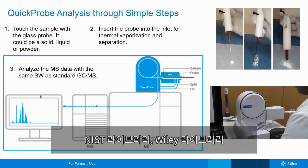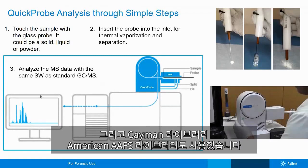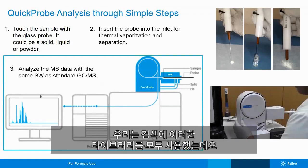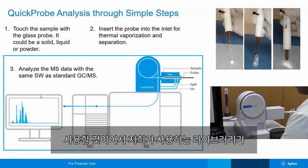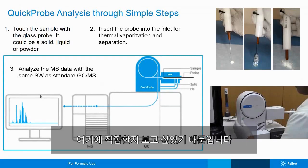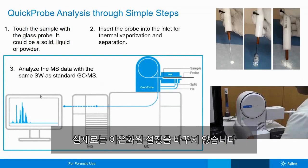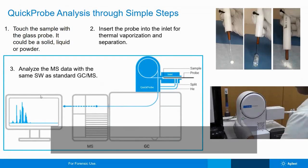We used our traditional libraries: the NIST library, the Wiley library, the Cayman library, and the American AAFS library — the same libraries we use on all of our GC-MS systems. We wanted to see if these libraries could hold up under this technique, and since you're not really changing any of your source settings, there's no reason they shouldn't be able to.